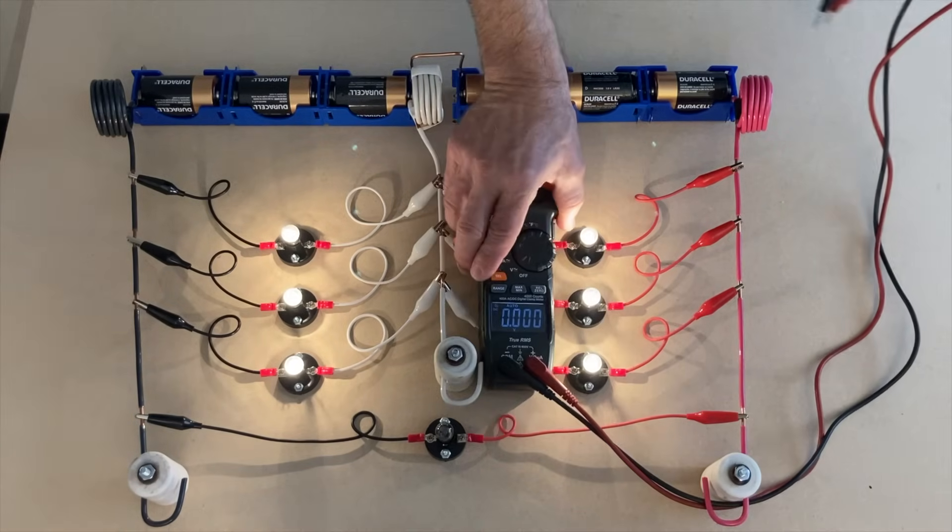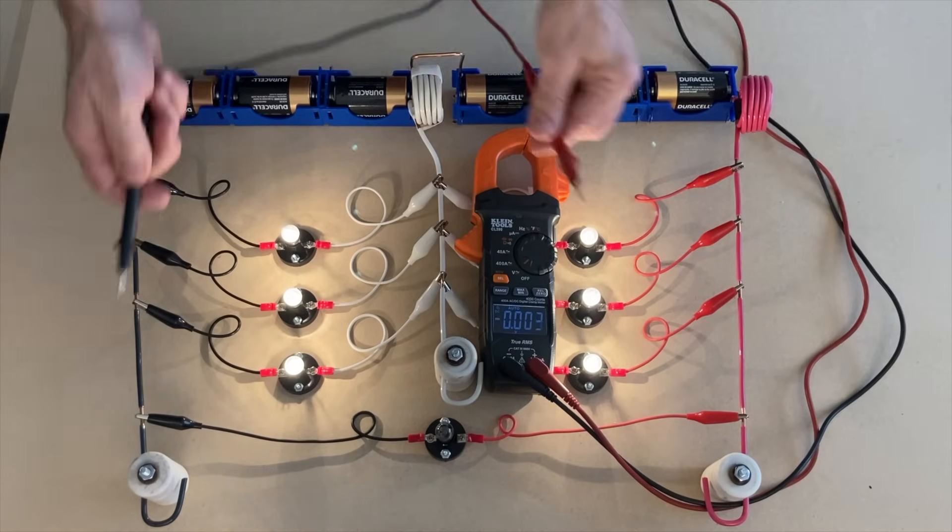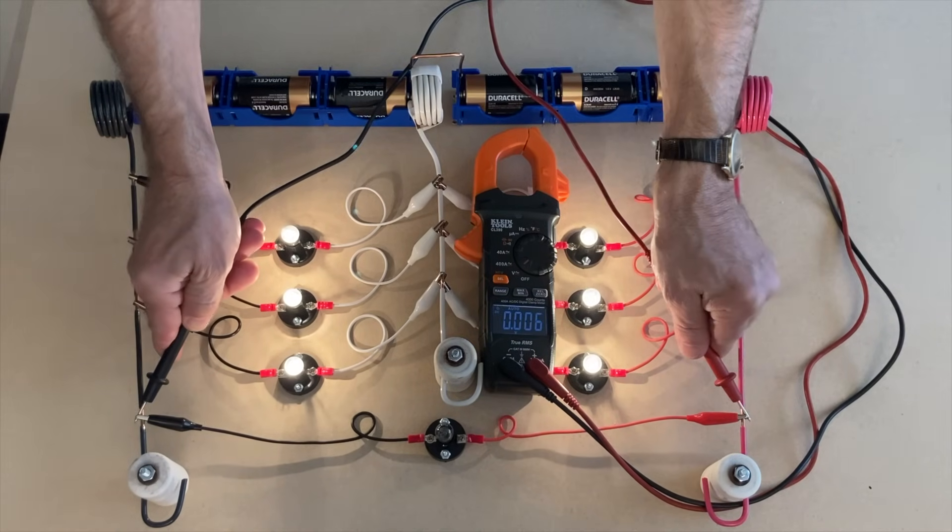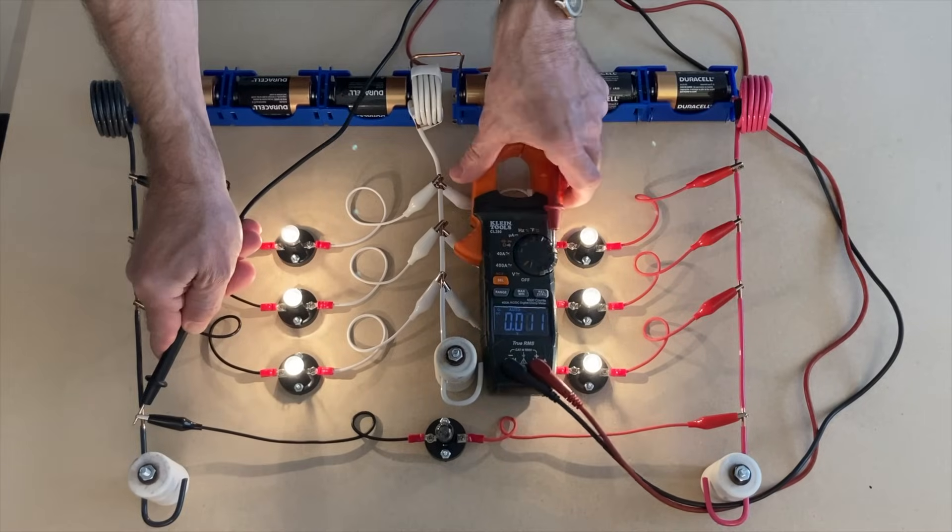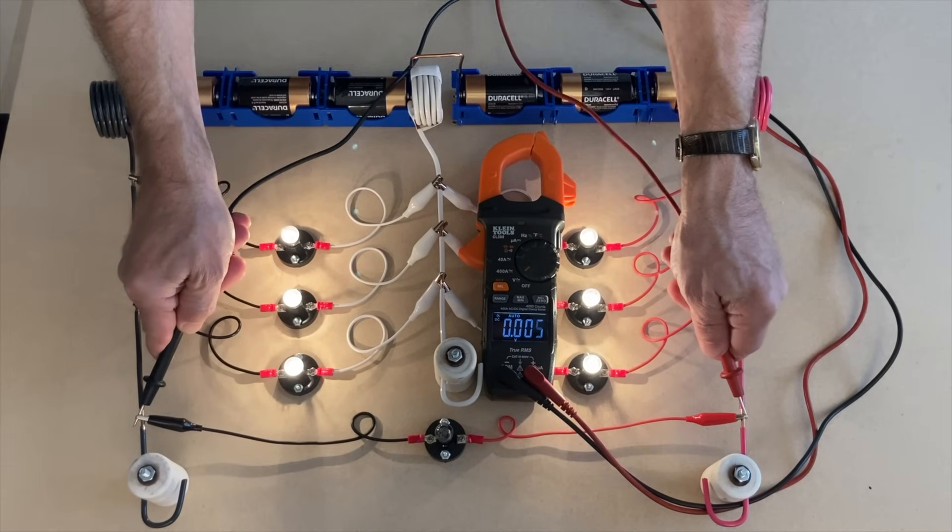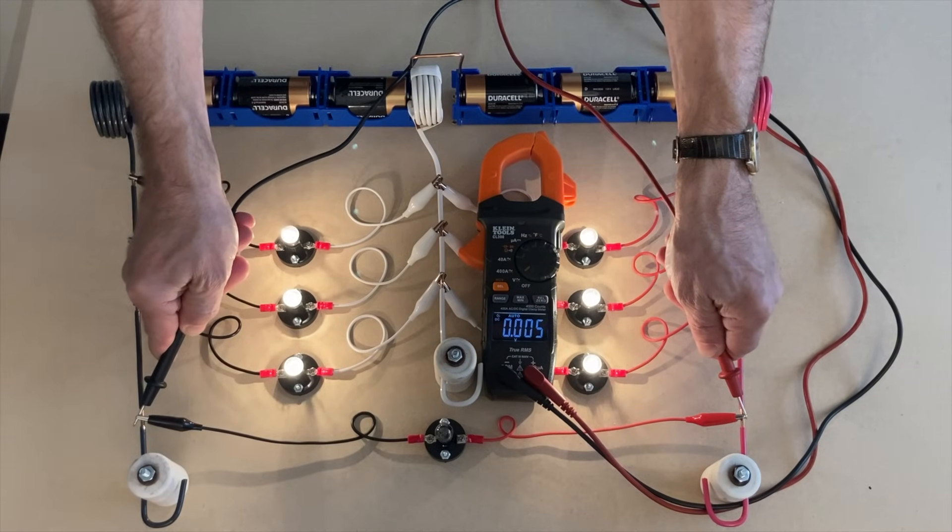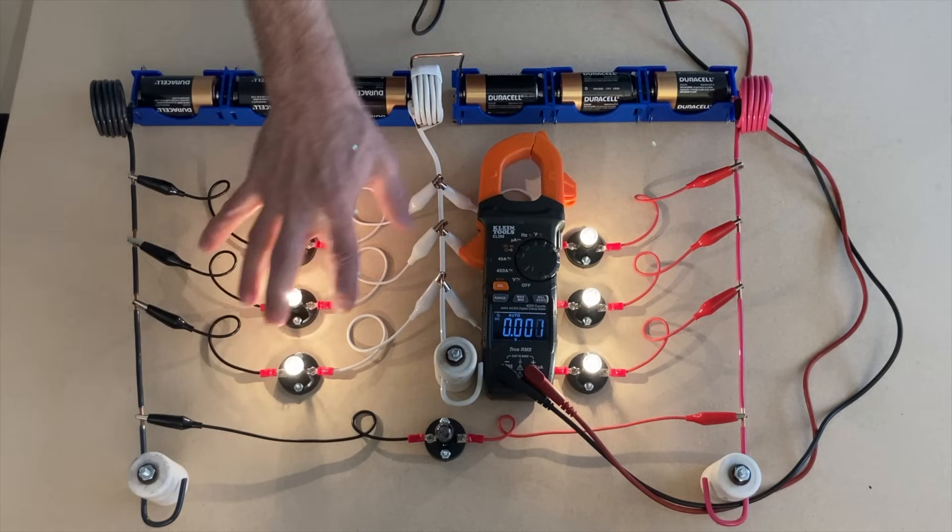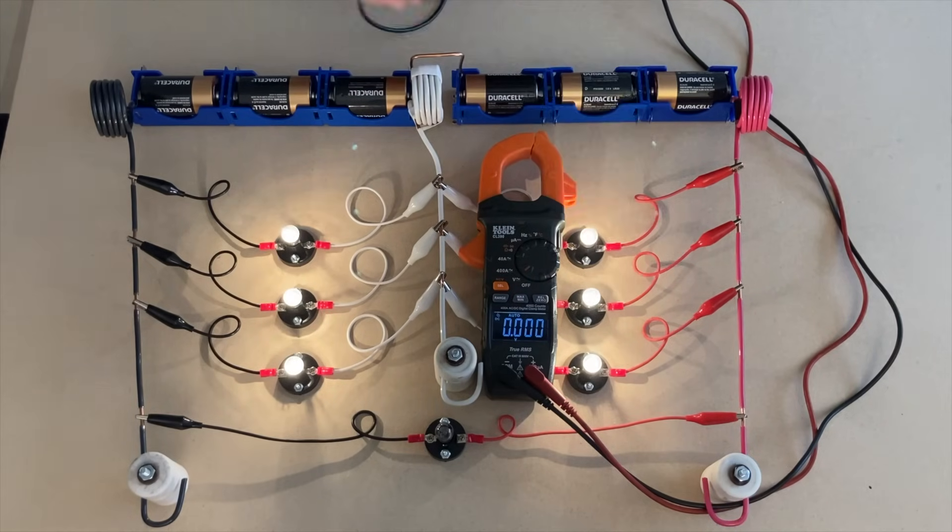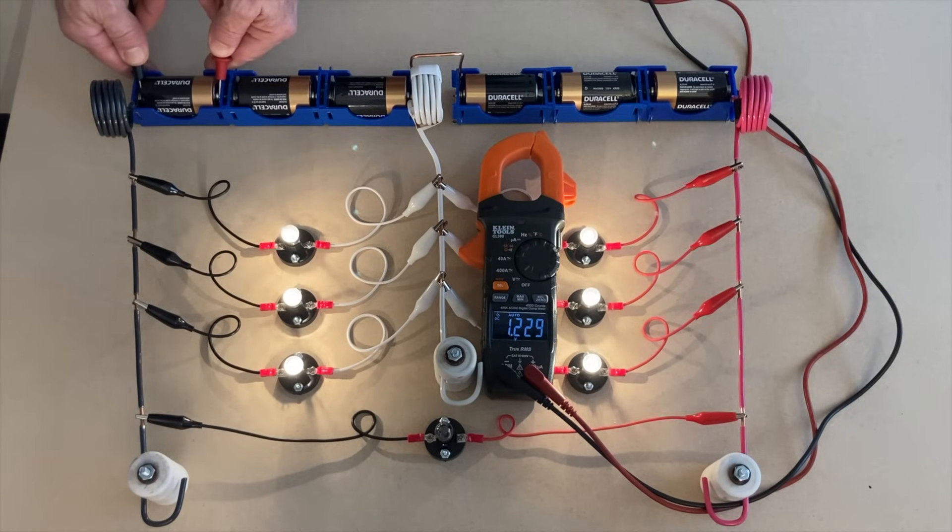We'll start by measuring some voltage. And sure enough, line to line, practically nothing. But point zero zero five. So there's obviously voltage here and here.